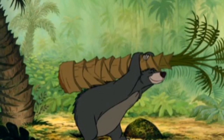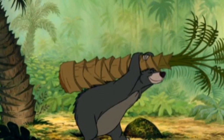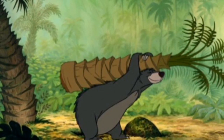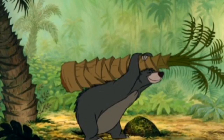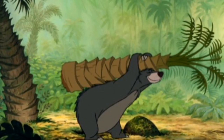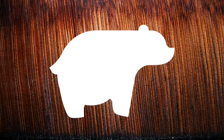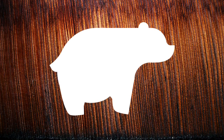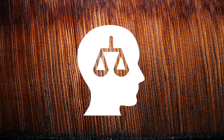Other acts of conformity that Mowgli committed include conforming to the elephants' way of life and conforming to Baloo's relaxed manner of living. In Baloo's case, the large bear tells Mowgli that you don't need to work for what you need, but rather it'll come to you. Mowgli instantly believed him and decided to follow Baloo's lifestyle until Bagheera came and talked reasoning to him.